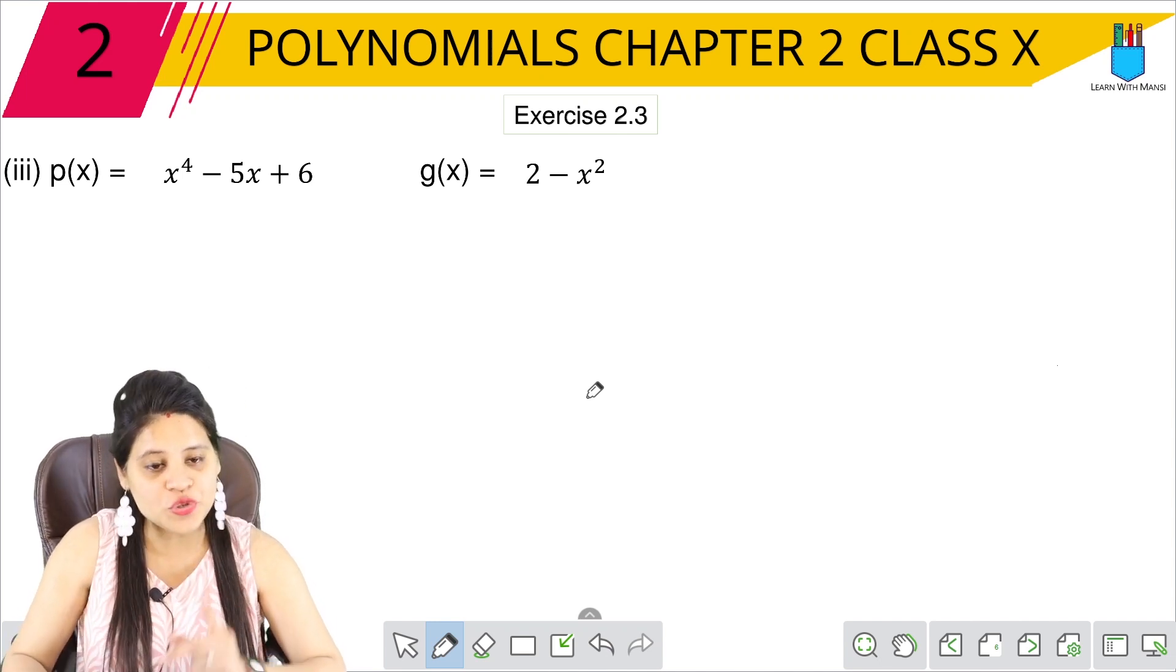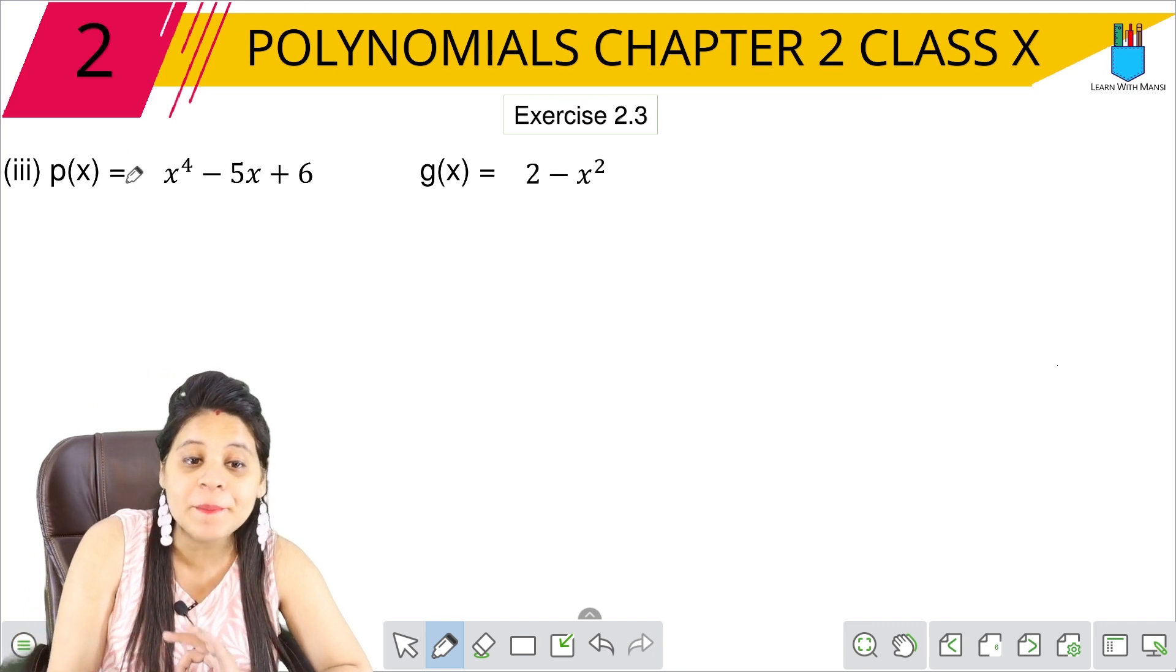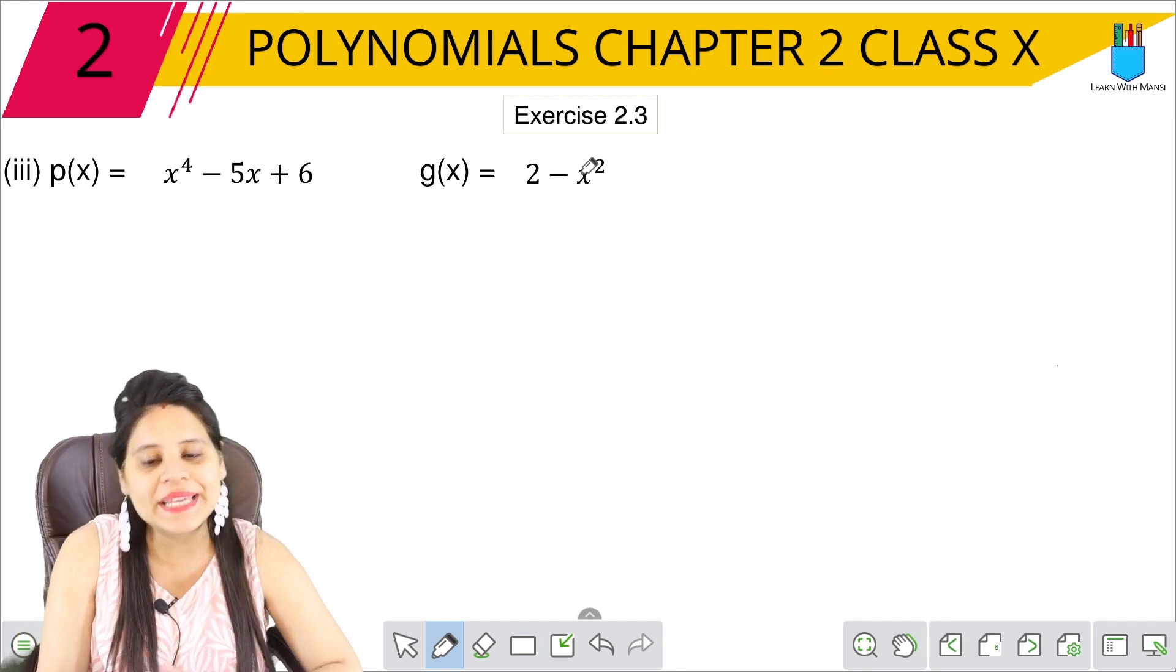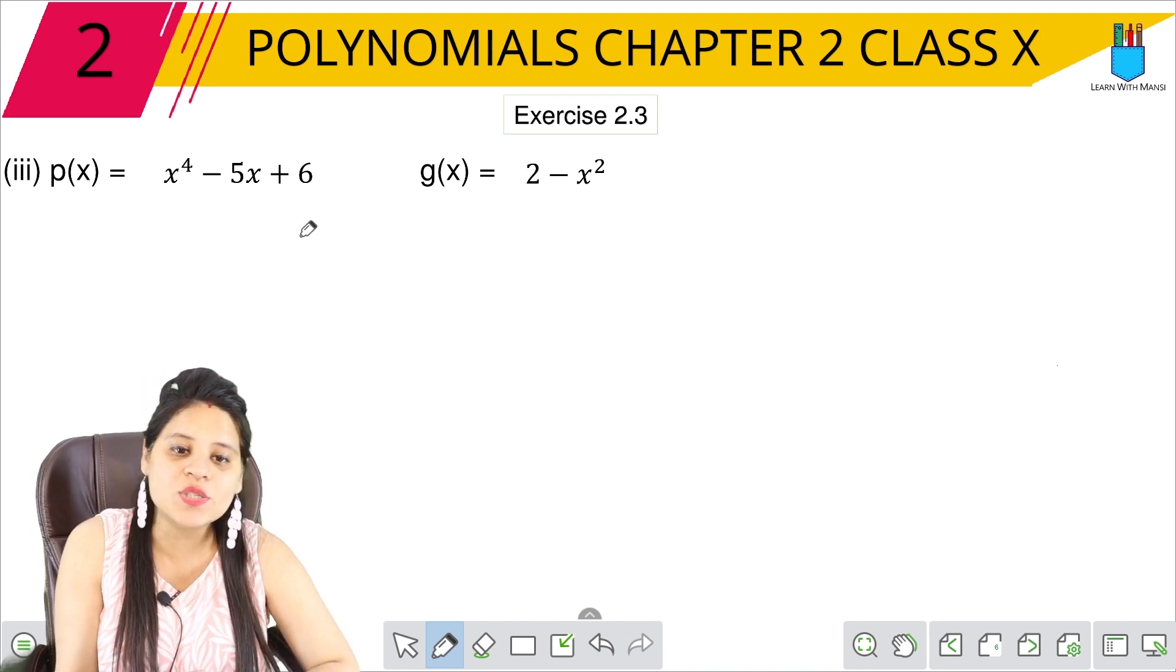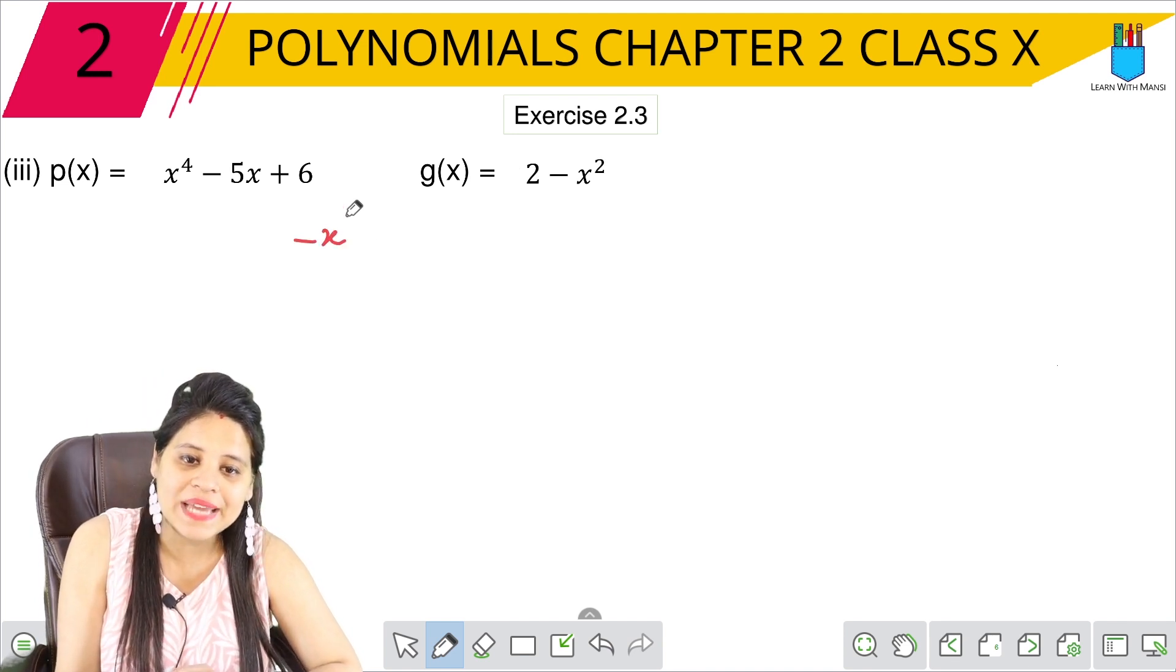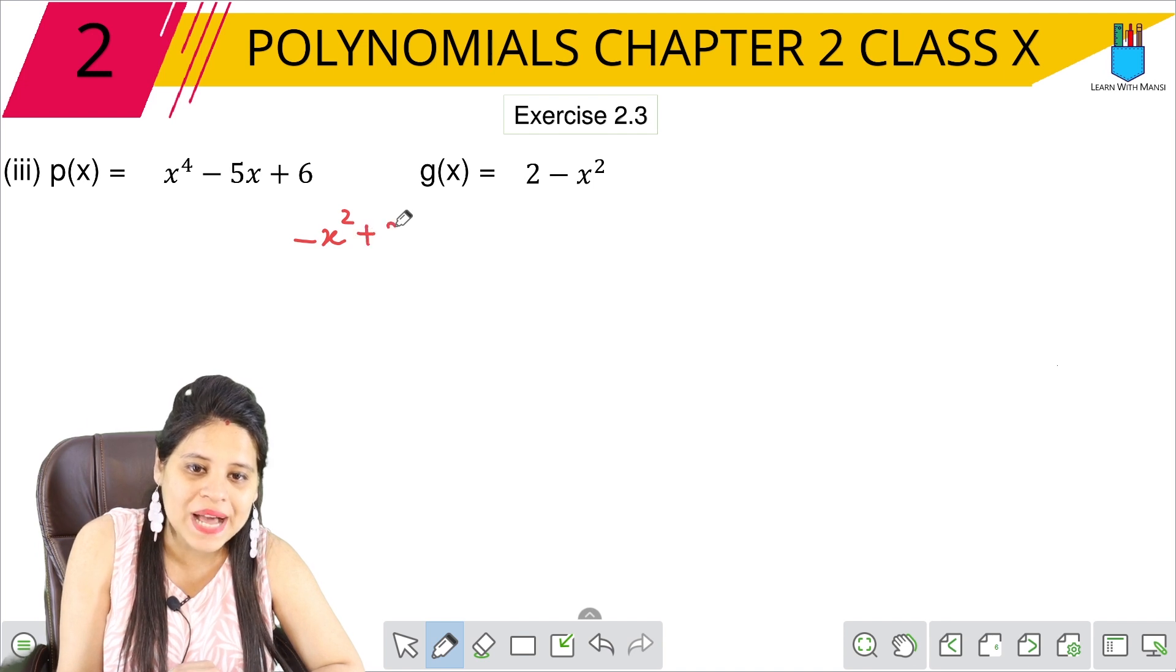So we have 2.3, the first question, in the third part. This is a polynomial. We have to divide this. Again, we will arrange this: 2 minus x square. So I can write it as minus x square plus 2.